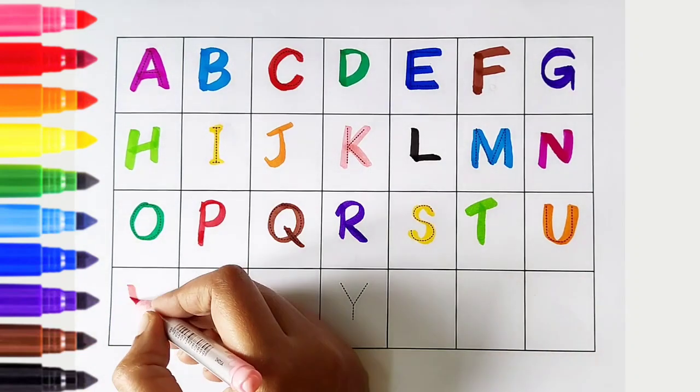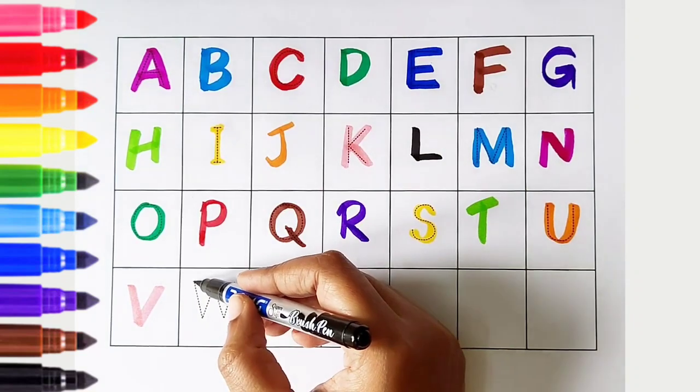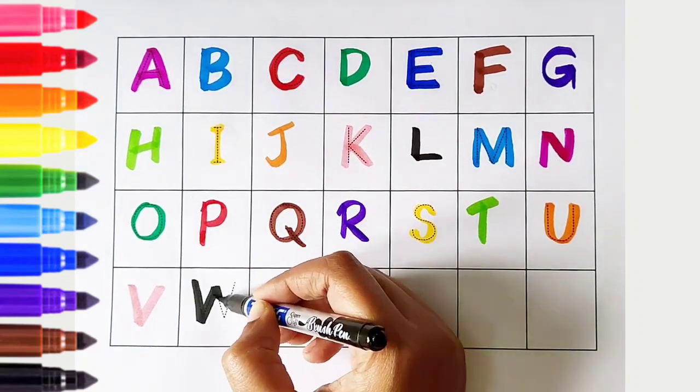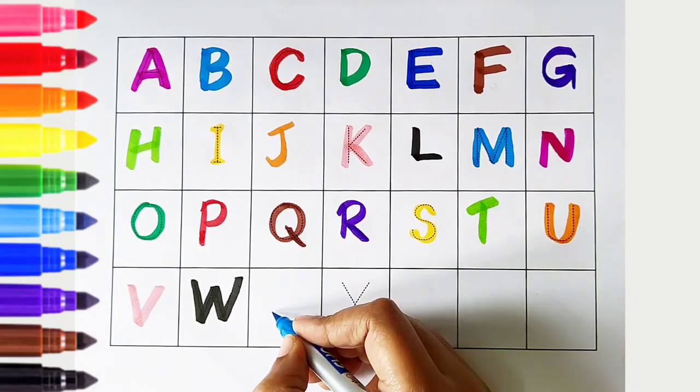V, light pink color, V is for van. W, black color, W is for water. X, light blue color, X is for xylophone.